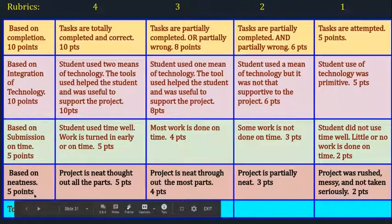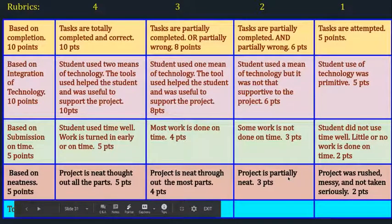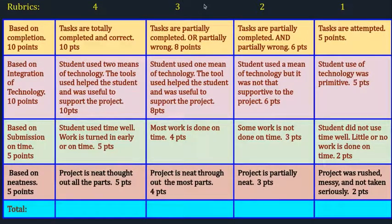Based on neatness, out of 5 points: project is neat throughout all parts — 5 points. Project is neat throughout most parts — 4 points. Project is partially neat — 3 points. And project was rushed, messy, and not taken seriously — 2 points. The total will be marked by the teacher based on our project.